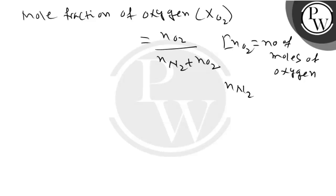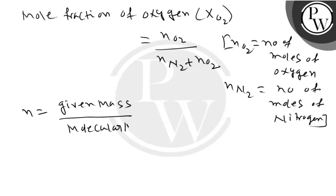n(N2) is the number of moles of nitrogen. n equals given mass divided by molecular mass. We have a little mistake here - the molecular mass of oxygen will be 32, not 20, not 16.